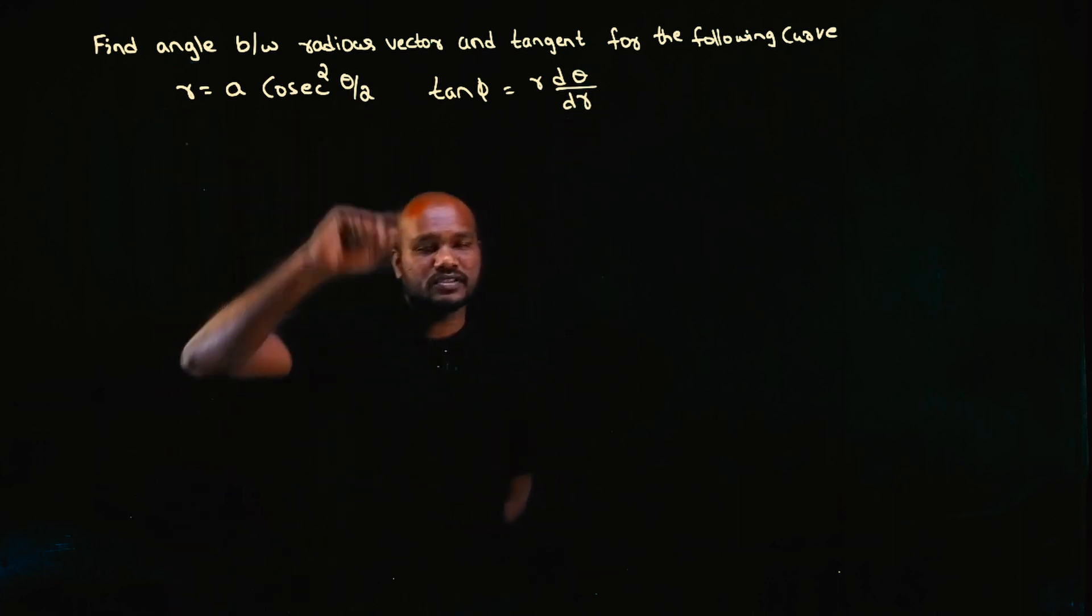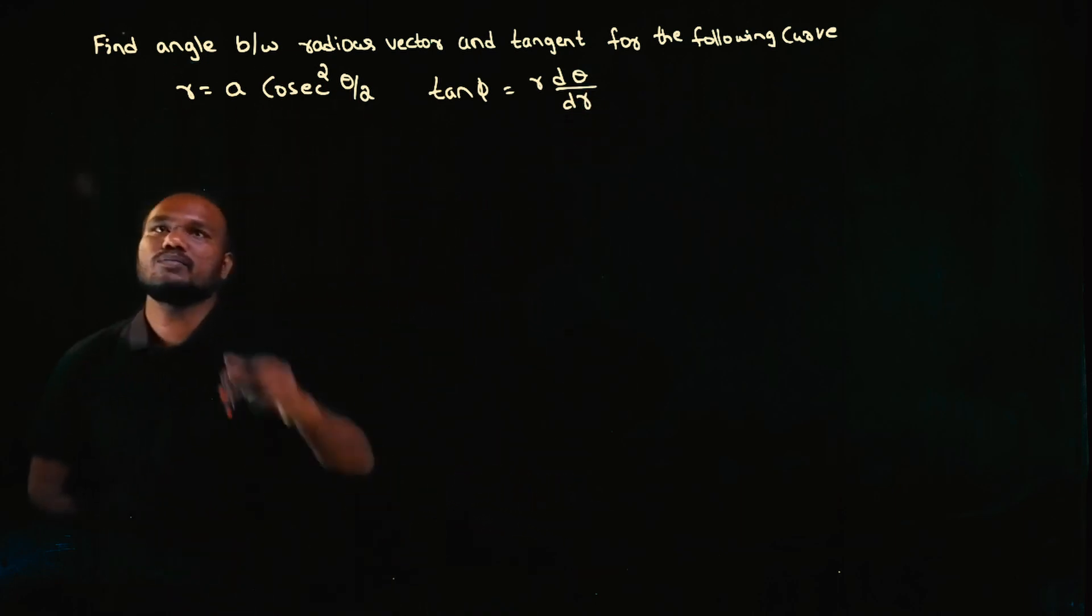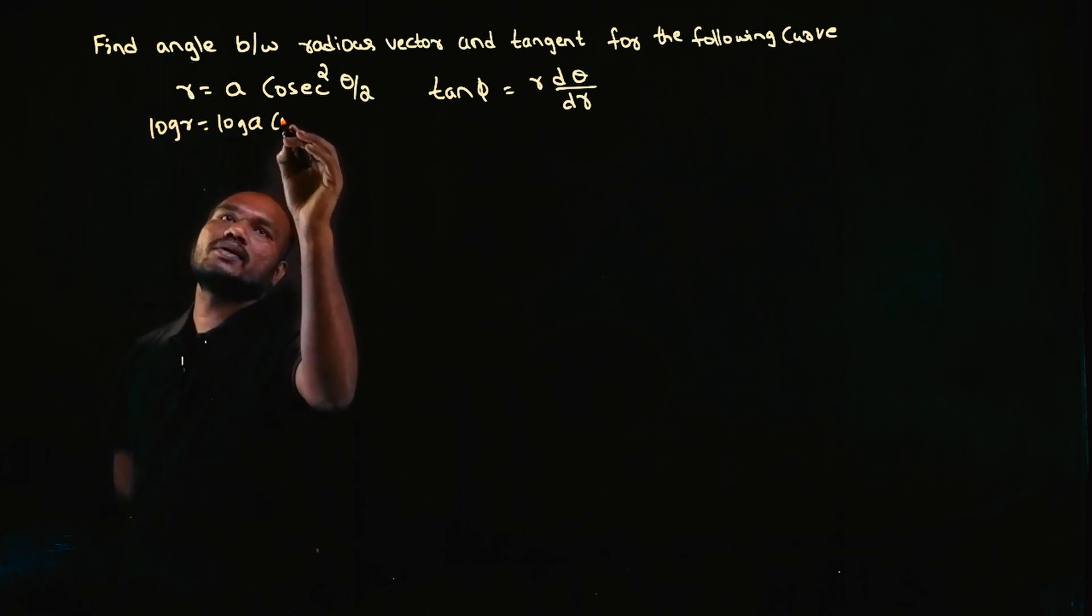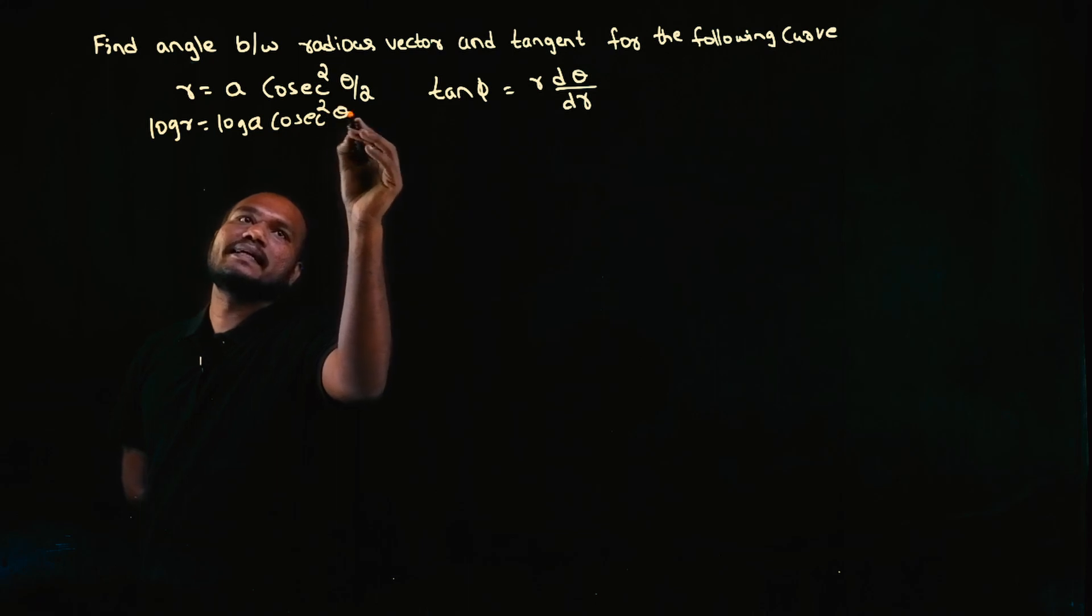We can't directly see r because of cosecant squared. So let's take log on both sides. Log r equals log of a·cosec²(θ/2).